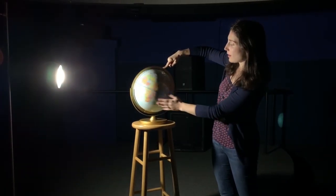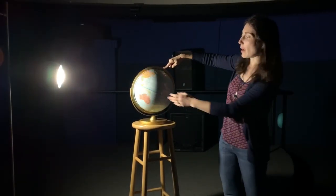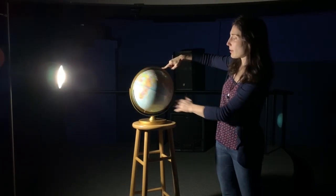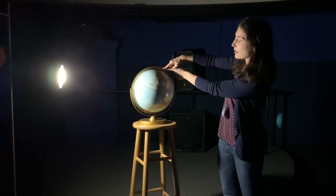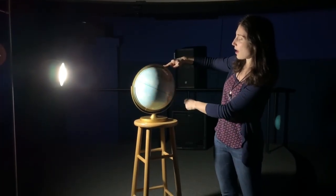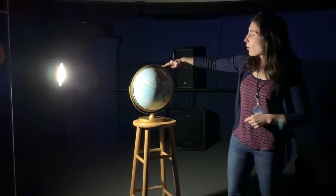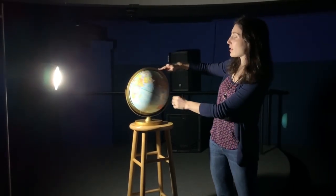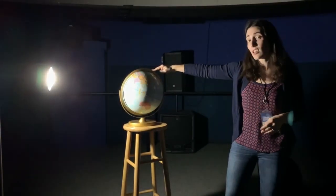If I spin our globe so that we're letting the days pass by, we spin around once per day, notice that the North Pole of our planet is remaining in darkness constantly. So up there on the North Pole right around the winter solstice it's 24 hours of darkness.